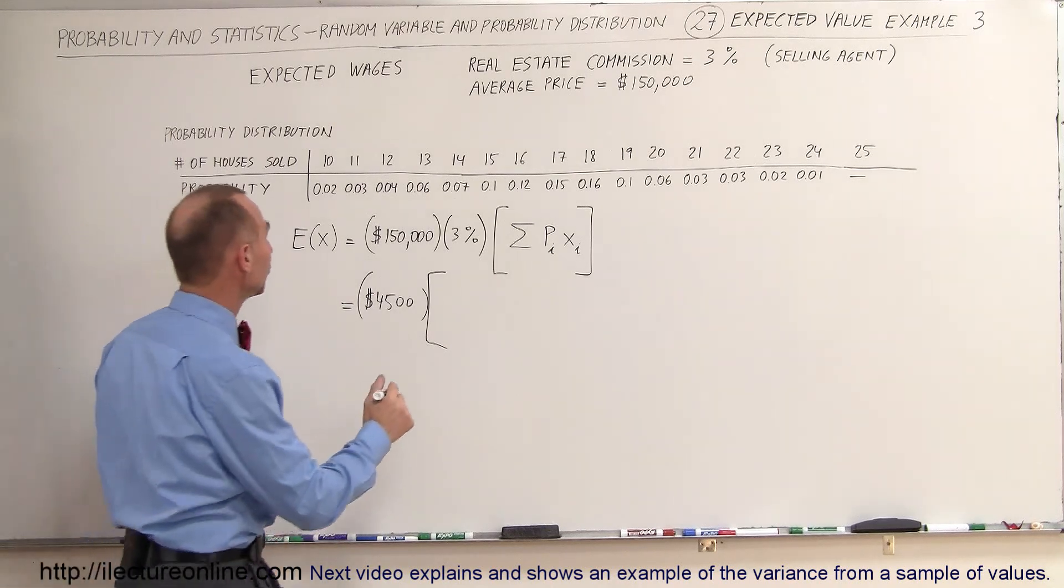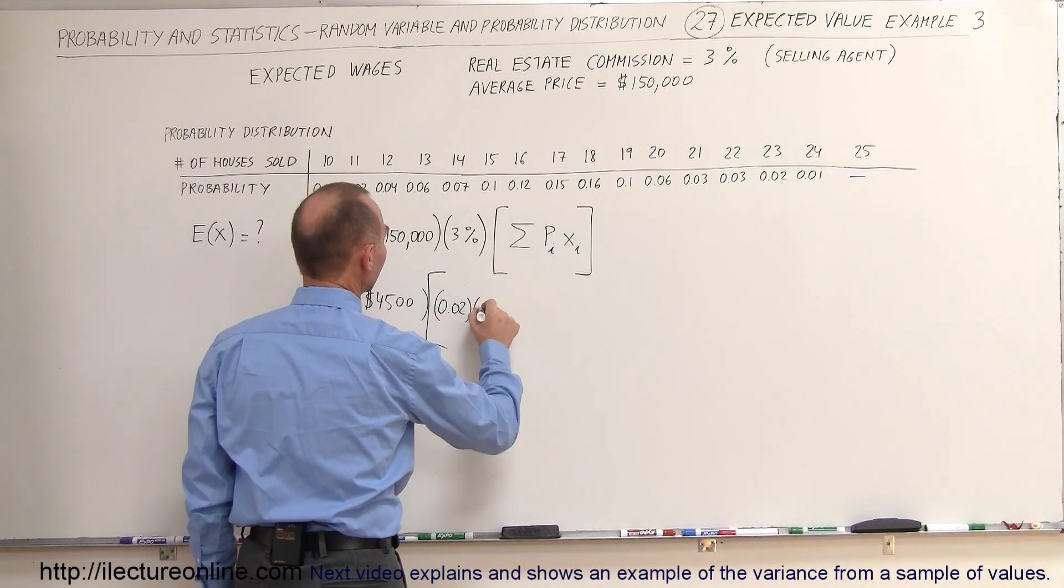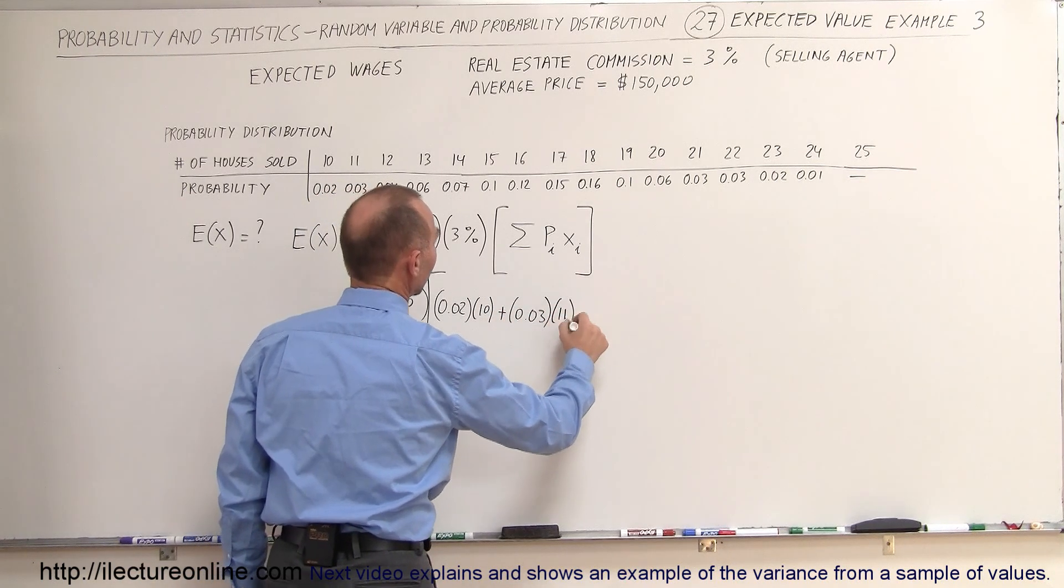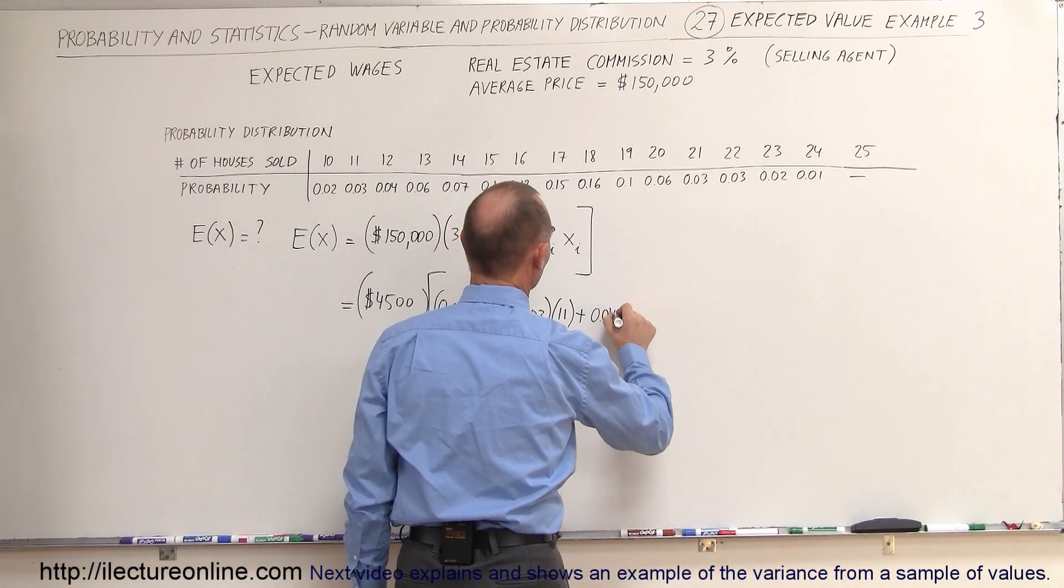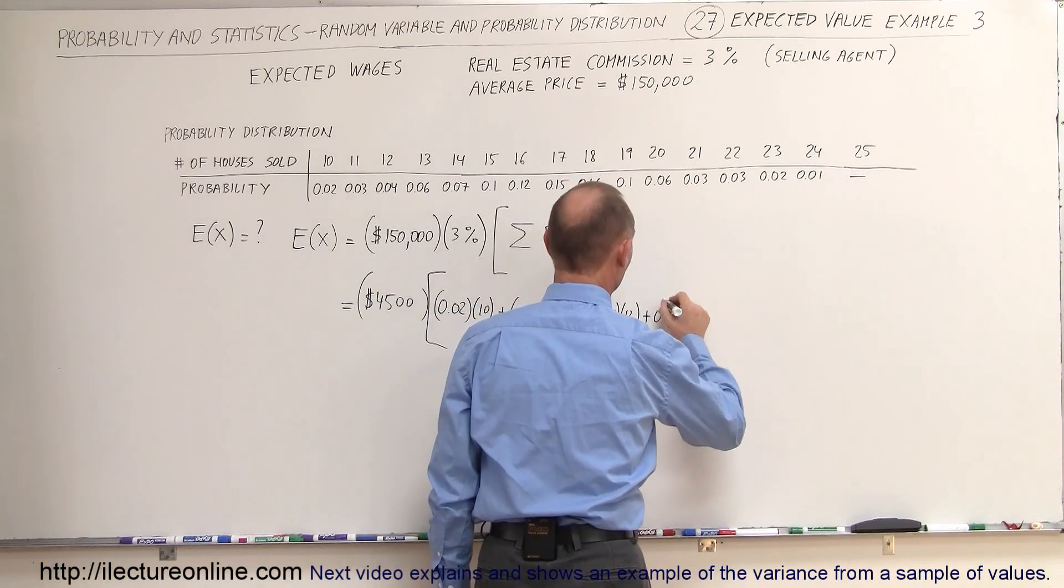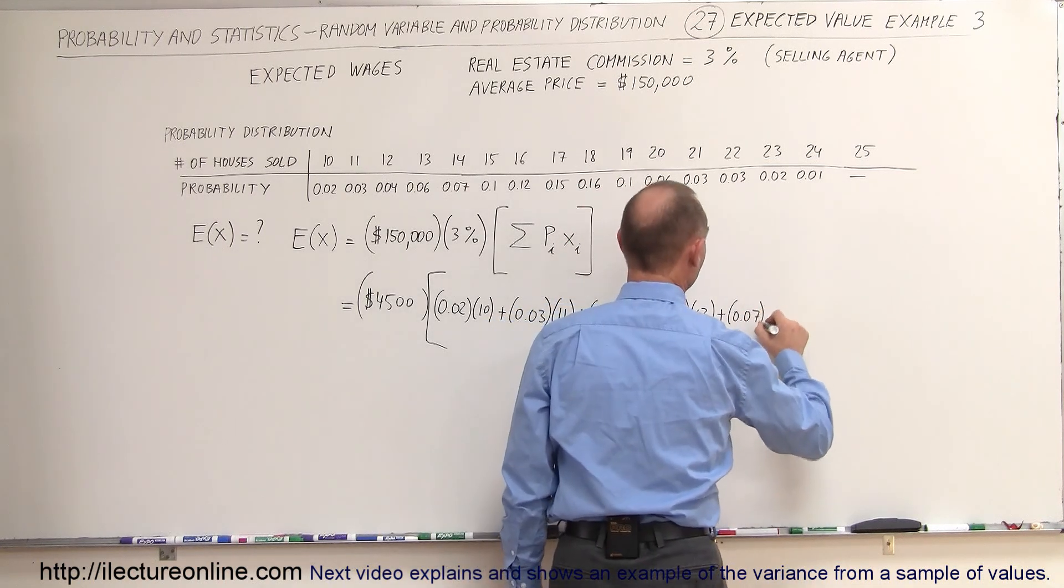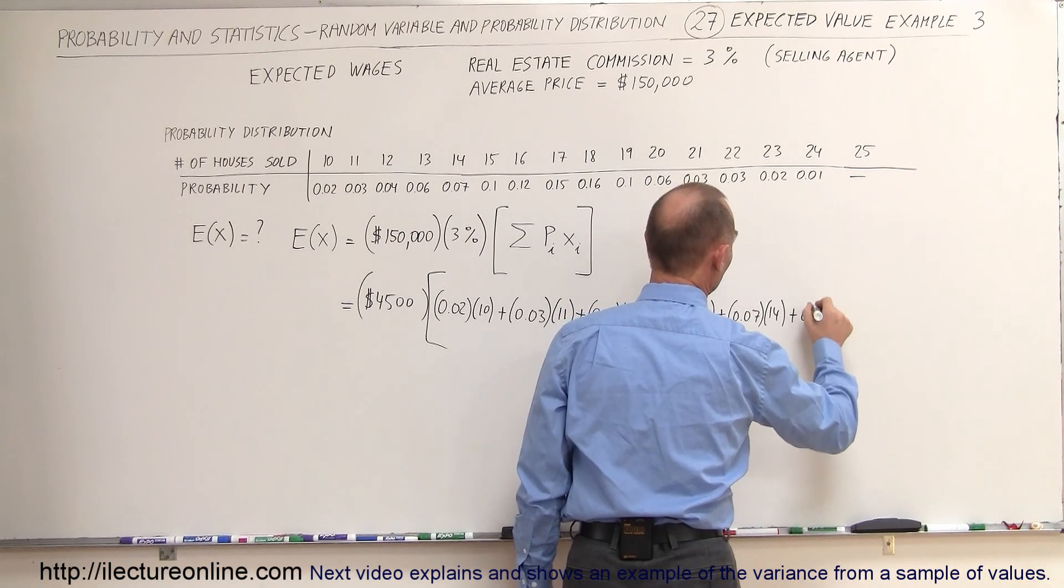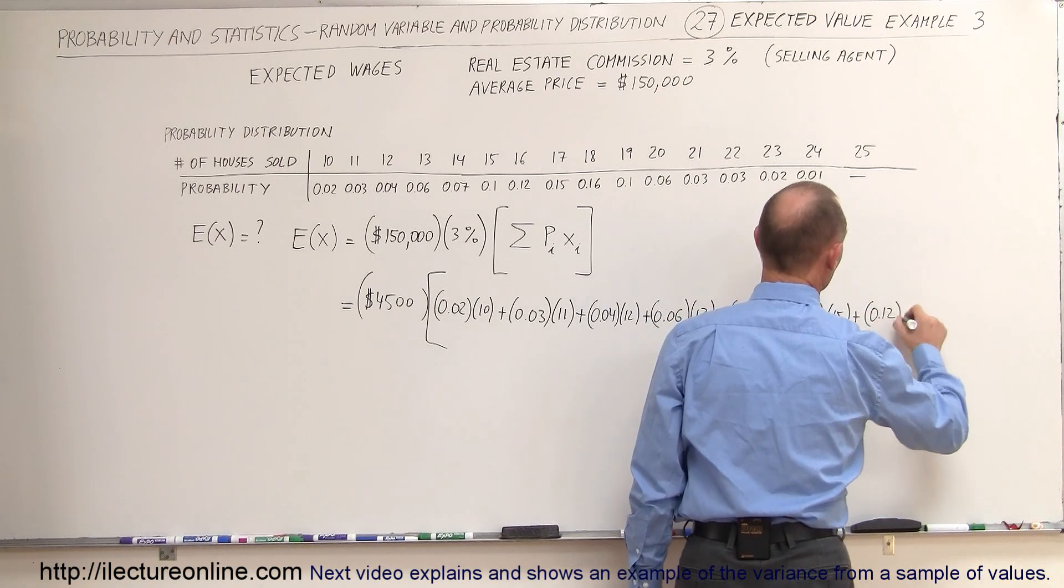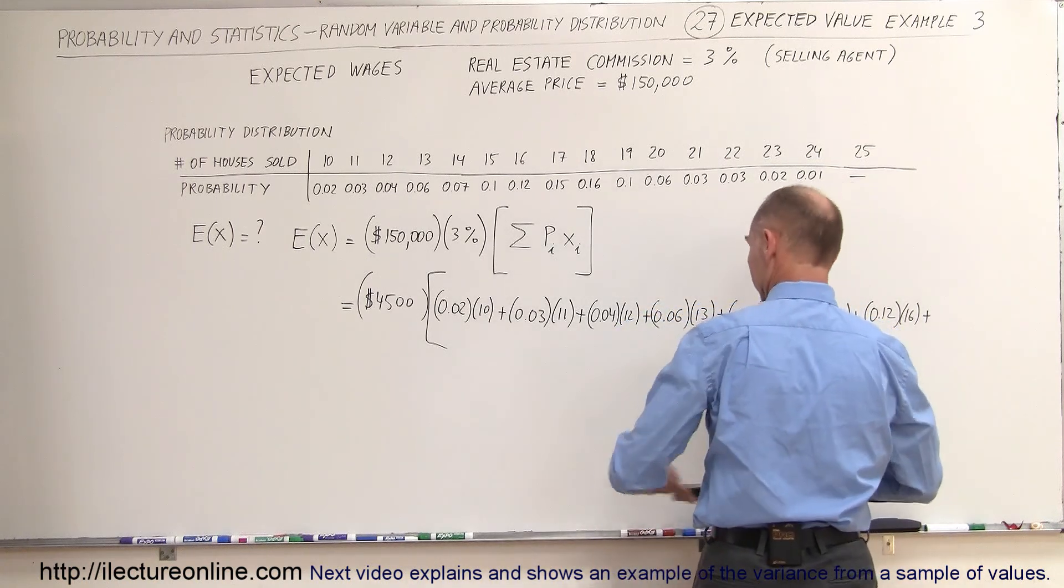It's quite an equation at this point so we have to multiply the number times the probability, so that would be 0.02 times 10 plus 0.03 times 11 plus 0.04 times 12 plus 0.06 times 13 plus 0.07, 0.06 times 14 plus 0.1 times 15 plus 0.12 times 16 plus, oops got a little ahead of myself, plus 0.15 times 17 plus,